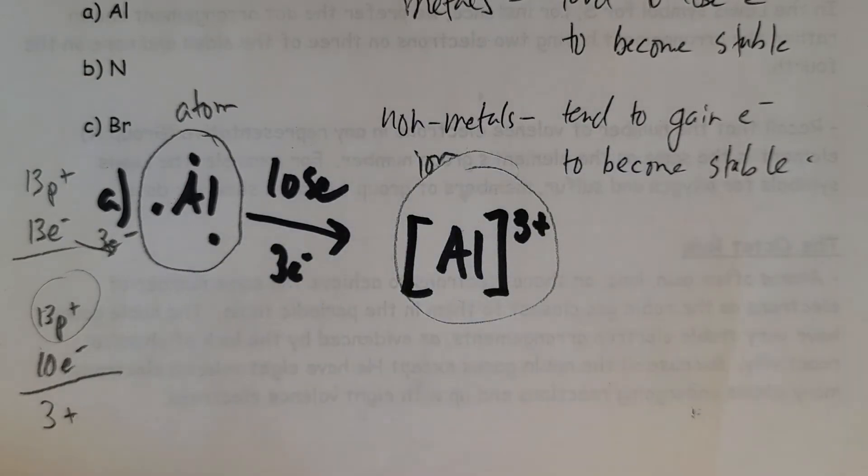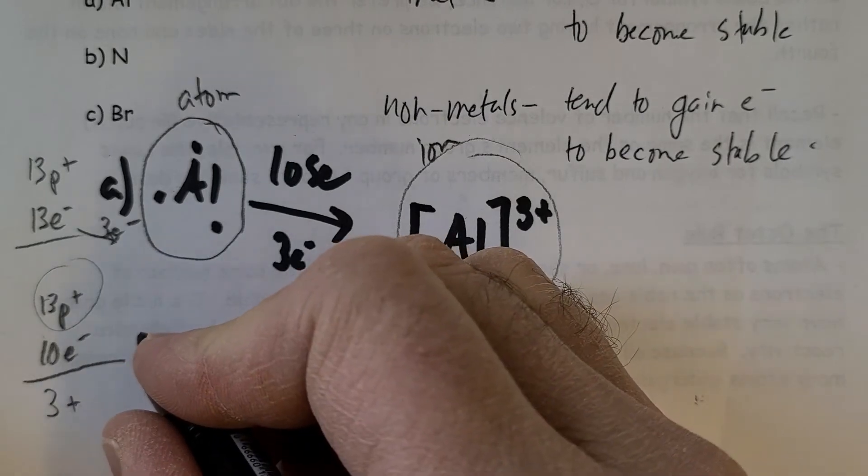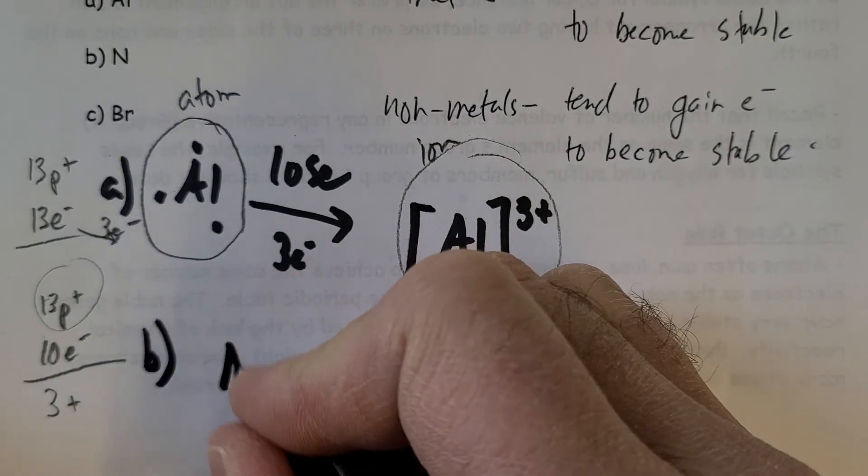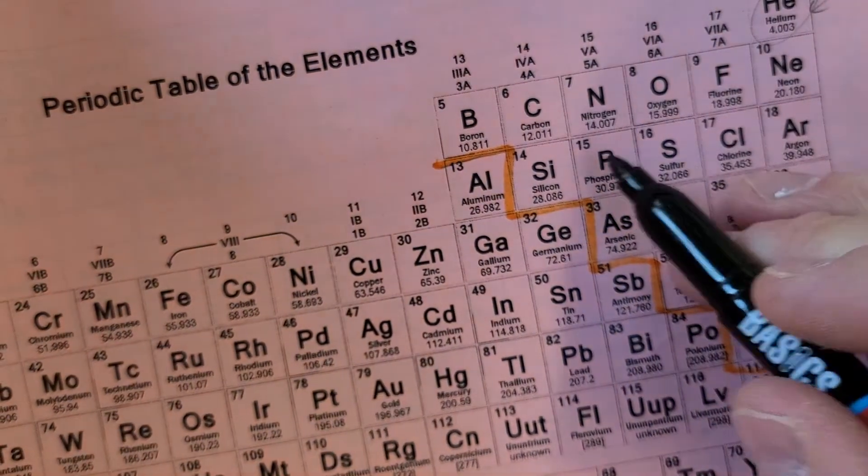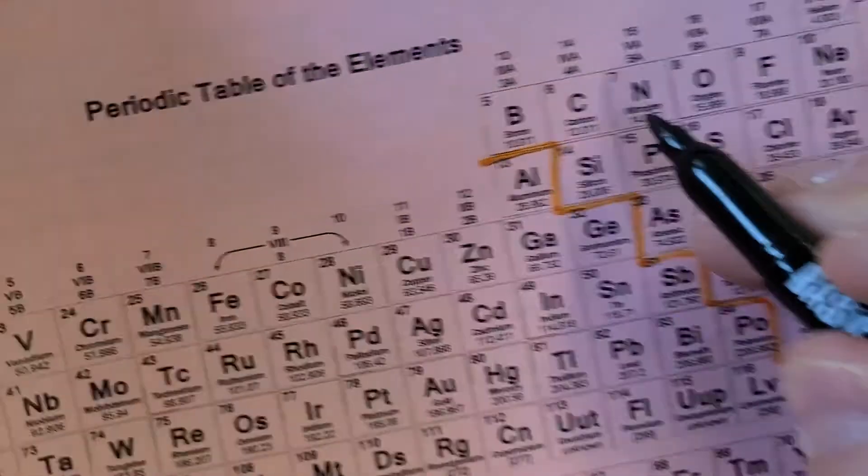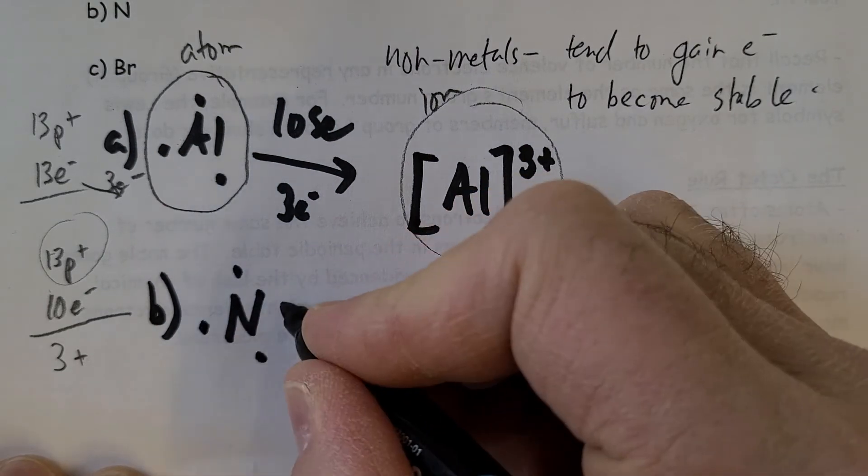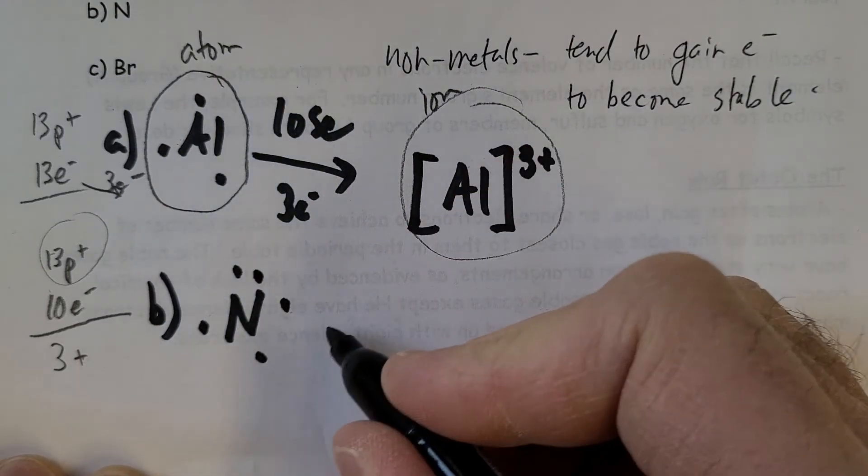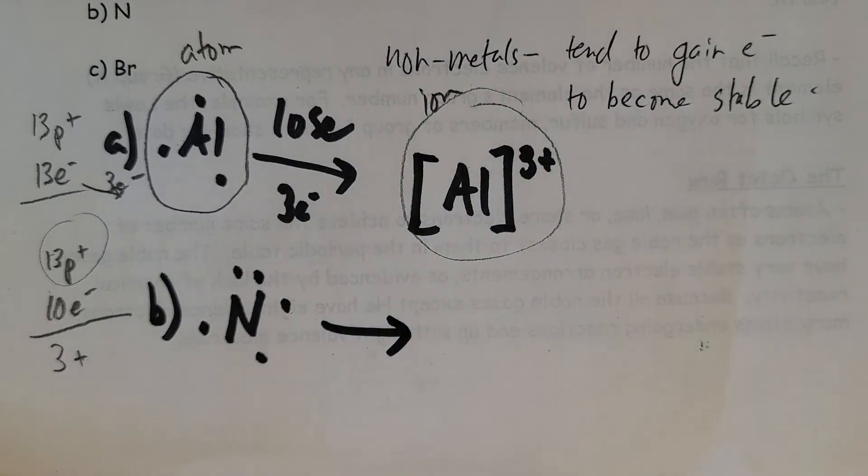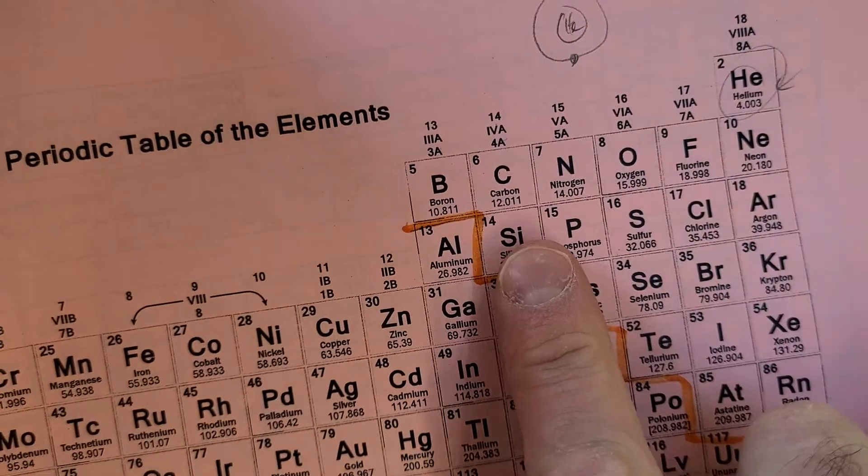If we look at nitrogen, nitrogen is right there, Group 5, so it'll have five valence electrons: one, two, three, four, five. And of course, hint hint, it's on the right-hand side, it's a non-metal, so we know that it's going to gain electrons.